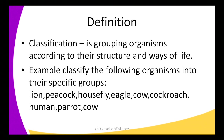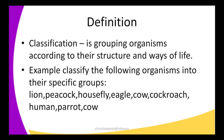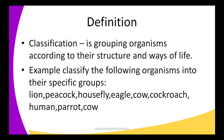For example, we can classify the following organisms into their specific groups. I have a number of organisms that we are going to classify looking at their structures and their ways of life: a lion, peacock, housefly, eagle, cow, cockroach, human, and parrot. We are going to classify these organisms using the two main criteria we have used to define classification.